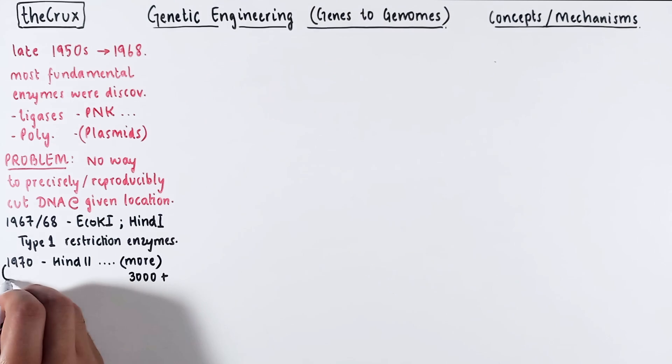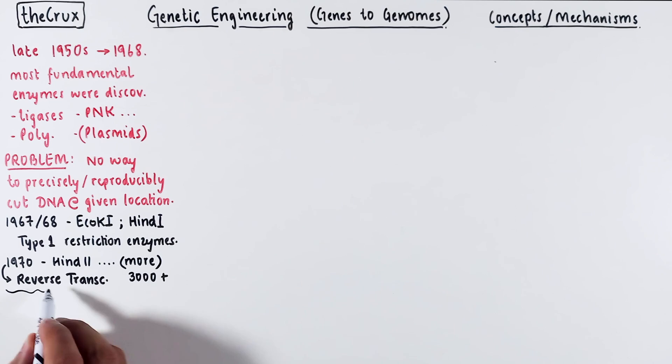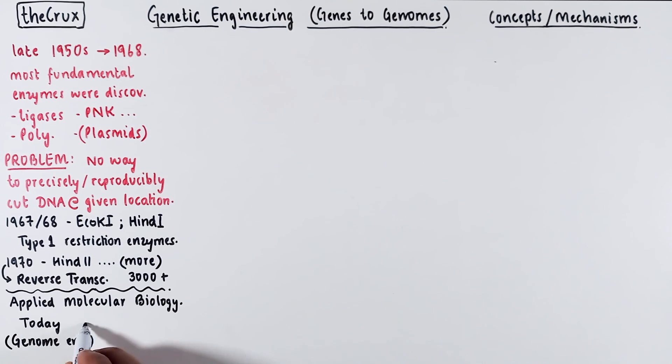In the early 1970s, another pivotal enzyme, reverse transcriptase, was discovered. This marked the beginning of a revolution that opened up the field of applied molecular biology, enabling gene cloning and genetic engineering. Fast forward to today, we possess the capabilities to manipulate entire genomes and modify organisms through advanced methods like CRISPR-Cas9.